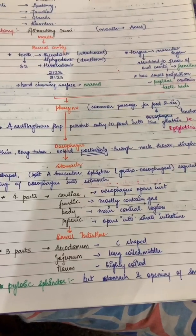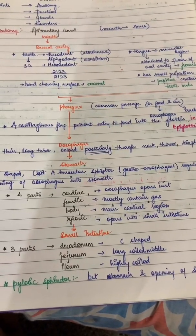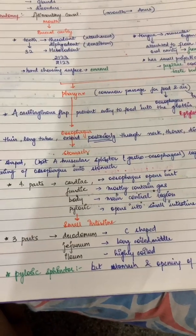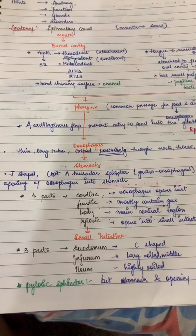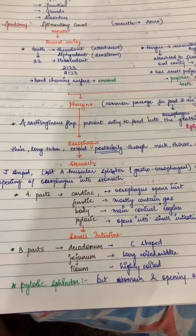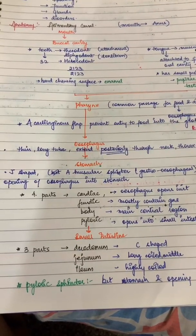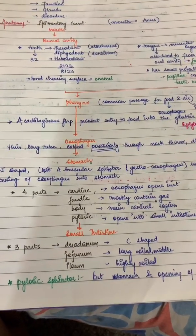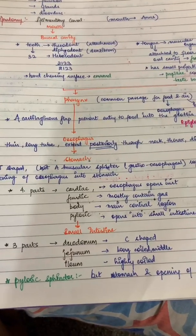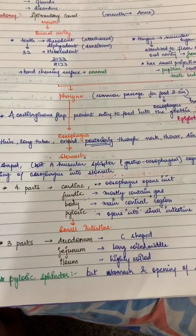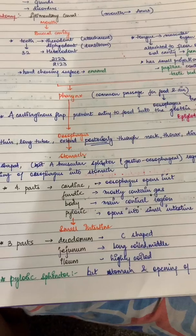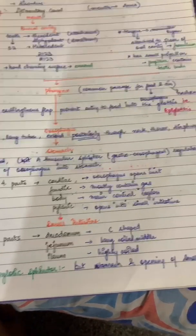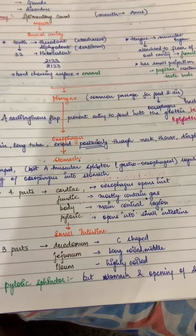If there are problems with the gastroesophageal sphincter, it leads to heartburn and indigestion, which we'll study later. The stomach has four parts: cardiac area, fundic area, body, and pyloric area. The cardiac area is where the esophagus opens. The fundic area mostly contains gas — in X-ray images, you can always identify the fundic area.